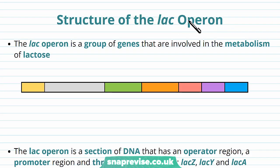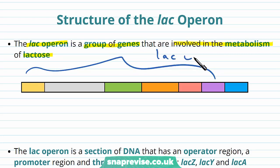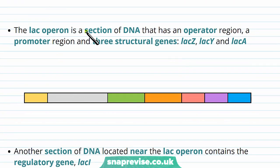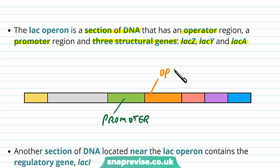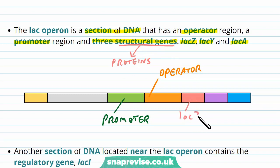To understand how the lac operon works, we need to understand its structure. The lac operon is a group of genes involved in the metabolism of lactose. This whole structure is the lac operon, and it has different sections of DNA with specific functions. It has a promoter region, an operator region, and three structural genes: lac Z, lac Y, and lac A. The promoter region is followed by the operator region, and then the three structural genes — by structural genes we mean they create proteins. These are the actual genes coding for proteins for lactose metabolism: lac Z, lac Y, and lac A.